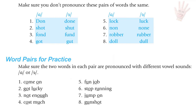Word combinations for Ah and Uh: come on, got lucky, not enough, cost much, fun job, stop running, jump on, gunshot.